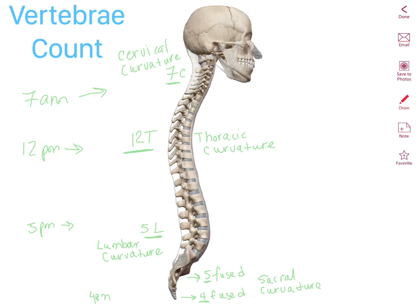Notice how the spine is not a straight line — there are curvatures. The thoracic curvature and the sacral curvature are both given by fetal position. When we start learning how to walk, we develop additional curvatures: the cervical curvature and the lumbar curvature.